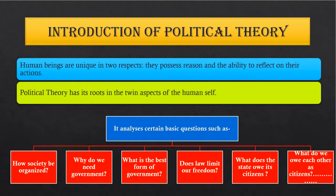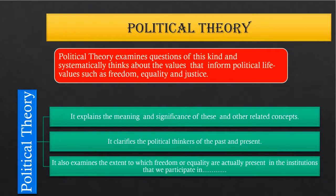Political theory analyzes certain basic questions such as: How should society be organized? Why do we need government? What is the best form of government? Does law limit our freedom? What does the state owe its citizens? What do we owe each other as citizens? Political theory examines questions of this kind and systematically thinks about the values that inform political life — values such as freedom, equality, and justice.